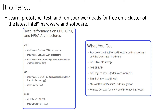You can choose from a vast range of CPU, GPU, and FPGA options available. What do you get eventually when you go ahead with Intel Dev Cloud? You get free access to all the Intel OneAPI toolkits and components, and most importantly, the latest Intel hardware. With Dev Cloud access you get 220 GB of file storage, 192 GB RAM, 120 days of access with extensions available, a terminal interface, Microsoft Visual Studio Code integration support, and remote desktop for Intel OneAPI Rendering Toolkit.